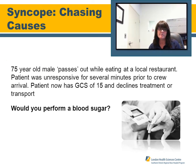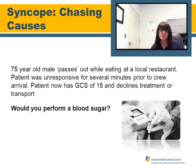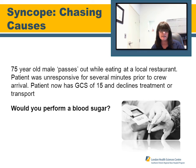Chasing Causes — Case Scenario: You have a 75-year-old male who passes out while eating at a local restaurant. The patient was unresponsive for several minutes prior to crew arrival. The patient now has a GCS of 15 and declines treatment or transport. Would you perform a blood sugar on this patient? Yes — given that he had a syncopal episode prior to crew arrival.